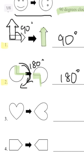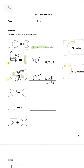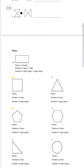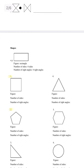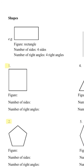Hopefully that made sense. Go ahead and pause the video to work on the rest of the questions, and then we're going to move on to shapes. They give us the example, and we've got to name the figure, the number of sides, and the number of right angles.